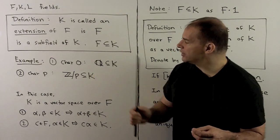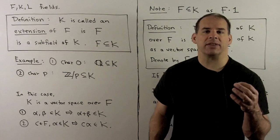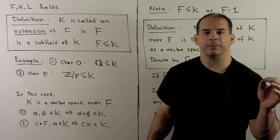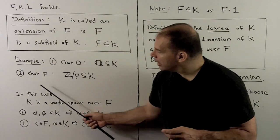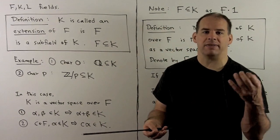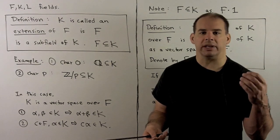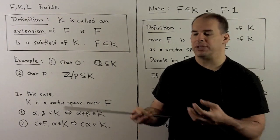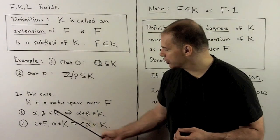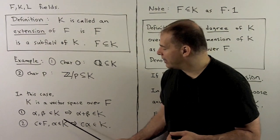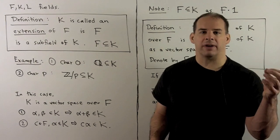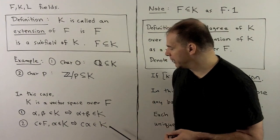In this situation, K is always going to be a vector space over F. If K is going to be a vector space, that means we're treating field elements as vectors. To be vectors, if we take any two vectors and add them together we get another vector — closed under addition. And if we take a vector and multiply by a scalar, we get another vector — closed under scalar multiplication.